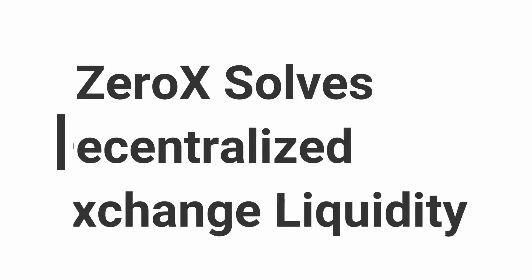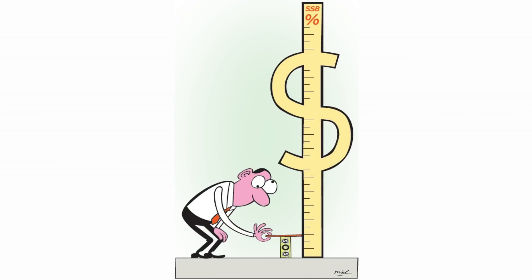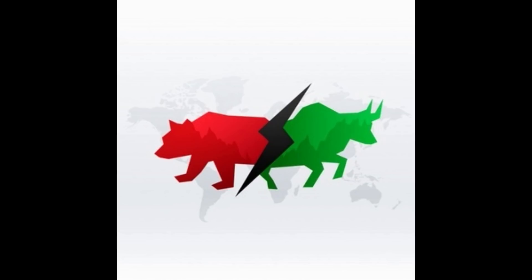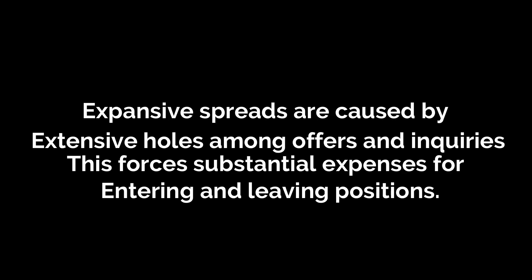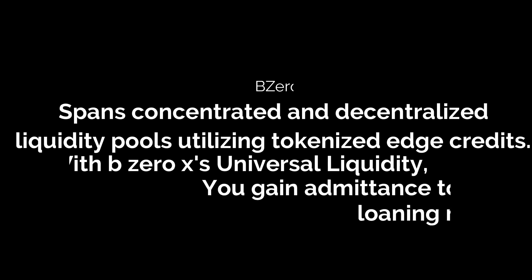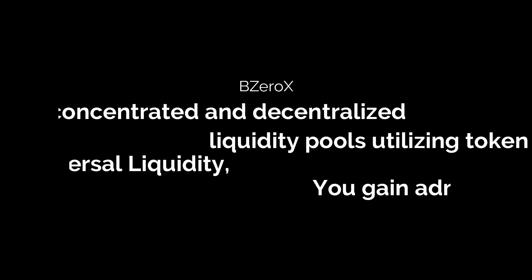Feature number three: B0X solves decentralized exchange liquidity. Decentralized trades have two major issues — low liquidity and huge spreads. Low liquidity implies that there is a low volume of buyers and sellers, which can result in worse prices or difficulties handling large orders. Expensive spreads are caused by large gaps between offers and asks, forcing substantial costs for entering and leaving positions. B0X bridges centralized and decentralized liquidity pools using tokenized margin loans, giving you access to the whole margin lending market, meaning less slippage and tighter spreads.